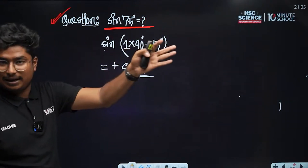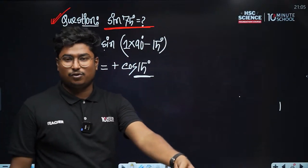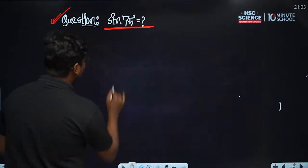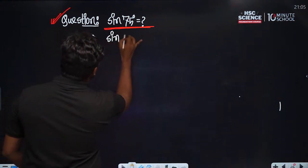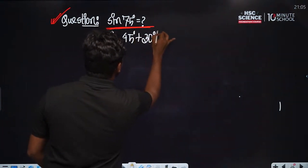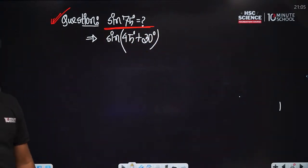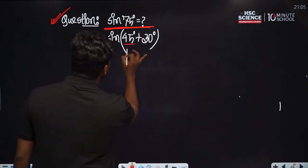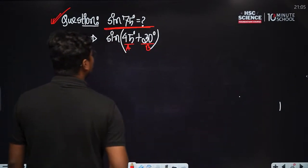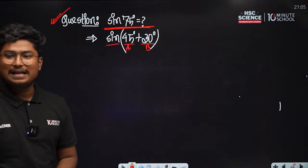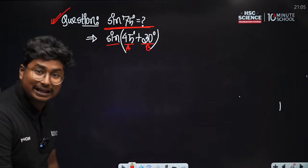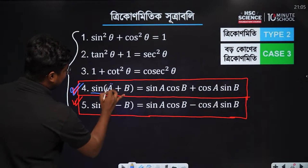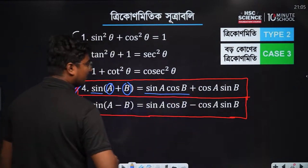But this time we are going to go ahead with a different procedure. We take 15 degrees and express 75° as 45° + 30°. So, applying sin(a + b), where a = 45° and b = 30°, we get sin 45° cos 30° plus cos 45° sin 30°.